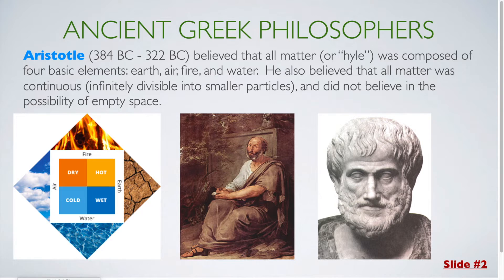In ancient Greece, there was a philosopher named Aristotle, and he believed that all matter was composed of four basic elements: earth, air, fire, and water. He also believed that all matter was continuous, that means that it is infinitely divisible or that you could always break it down into smaller particles. He did not believe in the possibility of empty space or a vacuum.